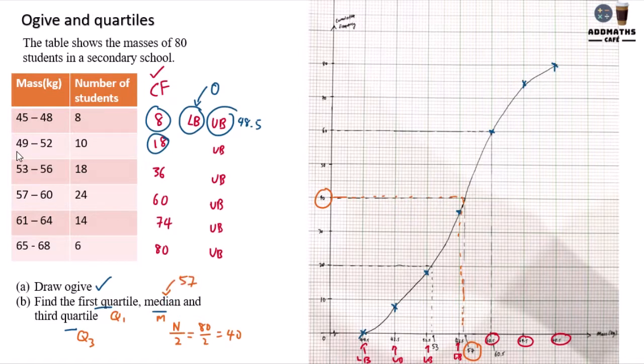Now find the first quartile. First quartile will be 1 over 4, which is 80 divide 4, you will get 20. So in 20 here, draw a dotted line, bring it down, and you will have 53. So this 53 is your first quartile.